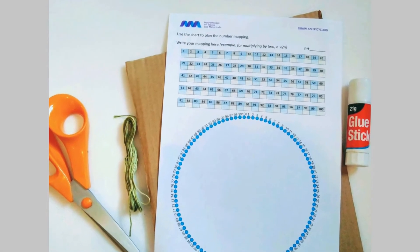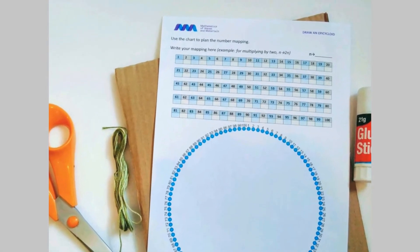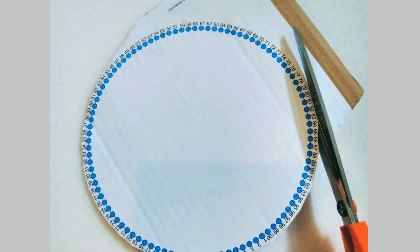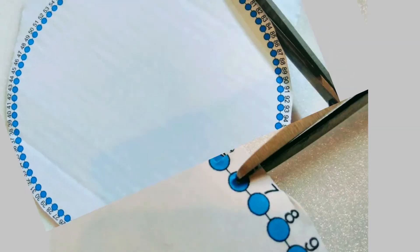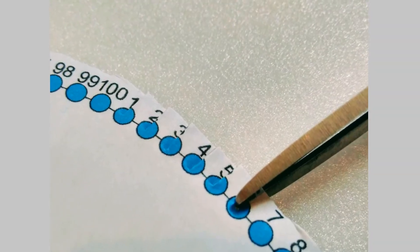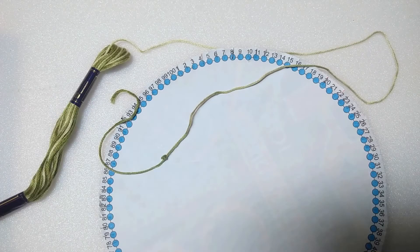To make a string art cardioid, you will need cardboard, scissors, glue and thread, string or yarn. Glue the template onto cardboard and ask an adult to help you cut around the numbers in a circle. Now cut a notch through each number to the dot.